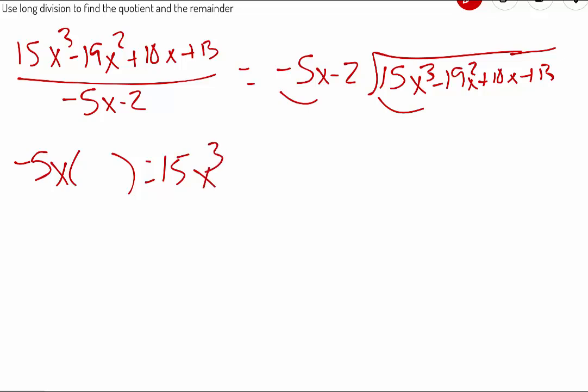Well, negative 5 times a negative 3 will make it a positive 15. x times x squared will give me that x cubed.